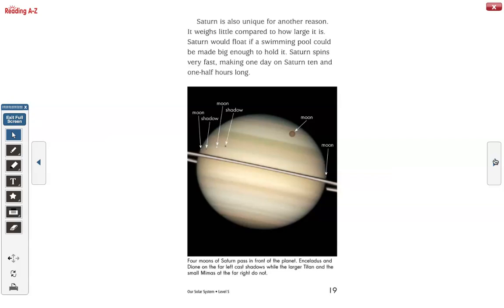Four moons of Saturn pass in front of the planet. Enceladus and Dione on the far left cast shadows while the larger Titan and the small Mimas at the far right do not.